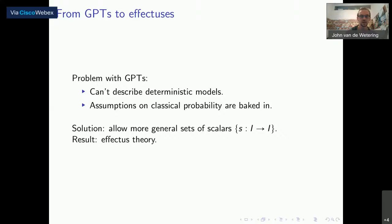What we're going to do is allow for a more general set of scalars — a more general set of probabilities. The result would be effectus theory.